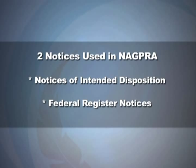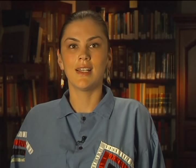A NAGPRA notice either establishes the rights to request, or it reflects the agreement to transfer control of Native American human remains and cultural items. We'll discuss the two types of notices used in NAGPRA — notices of intended disposition and Federal Register notices — and review what information each type of notice should contain. For ease of reference, I may refer to lineal descendants, Indian tribes, Alaska Native villages and corporations, and Native Hawaiian organizations all as Indian tribes.